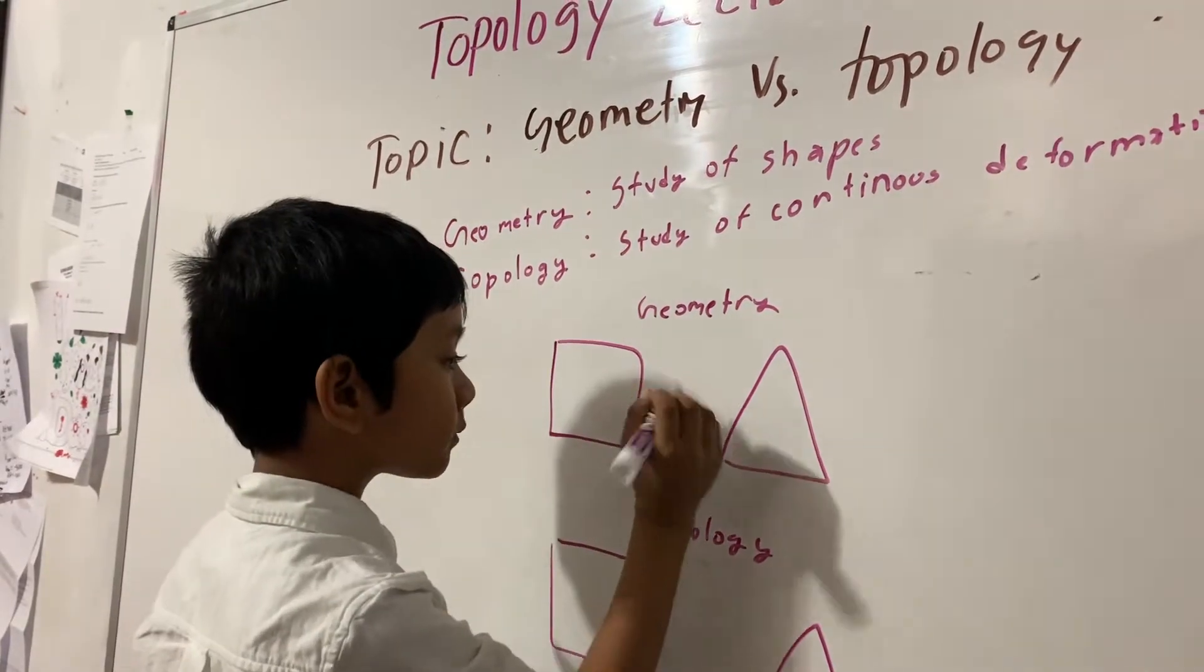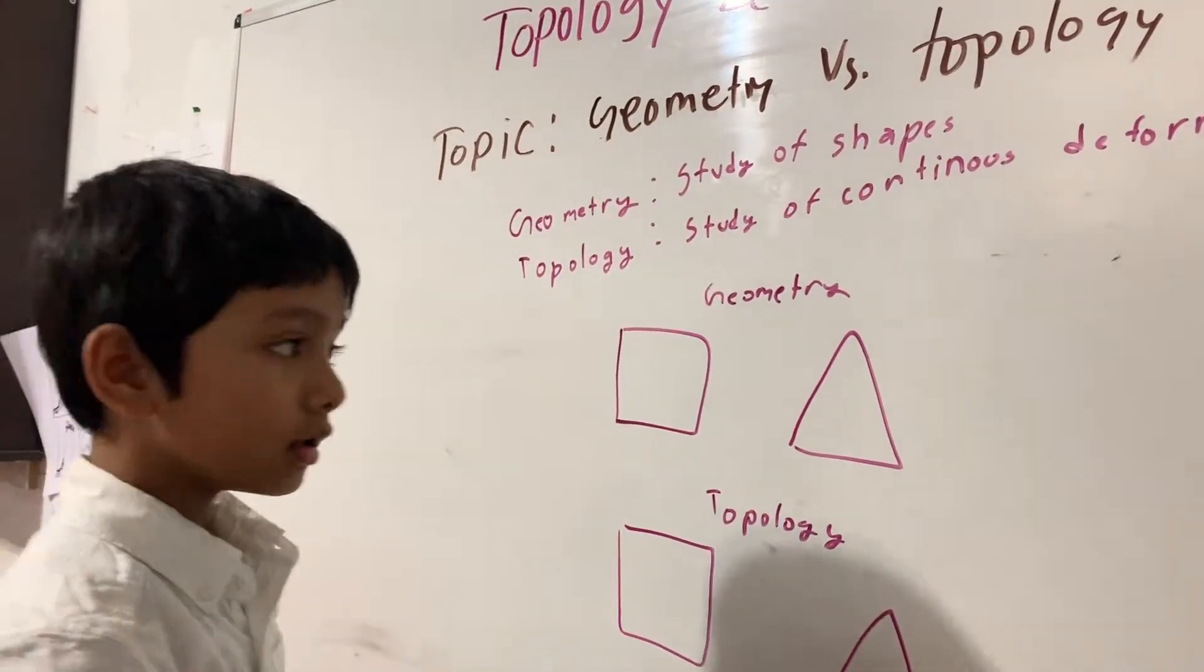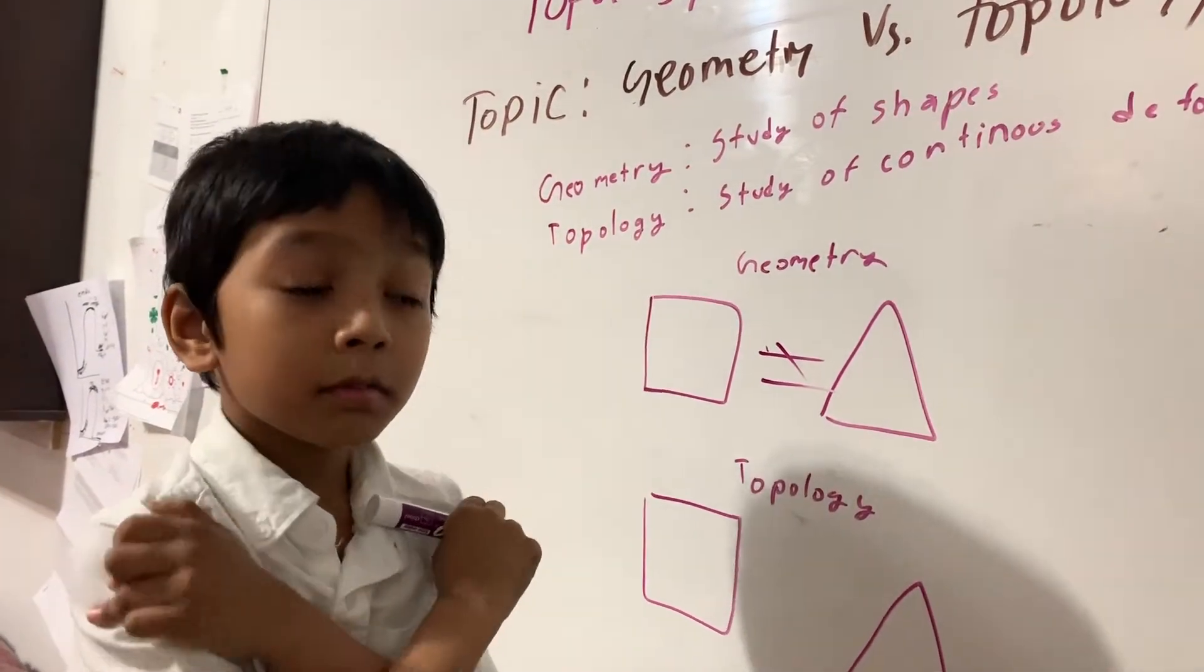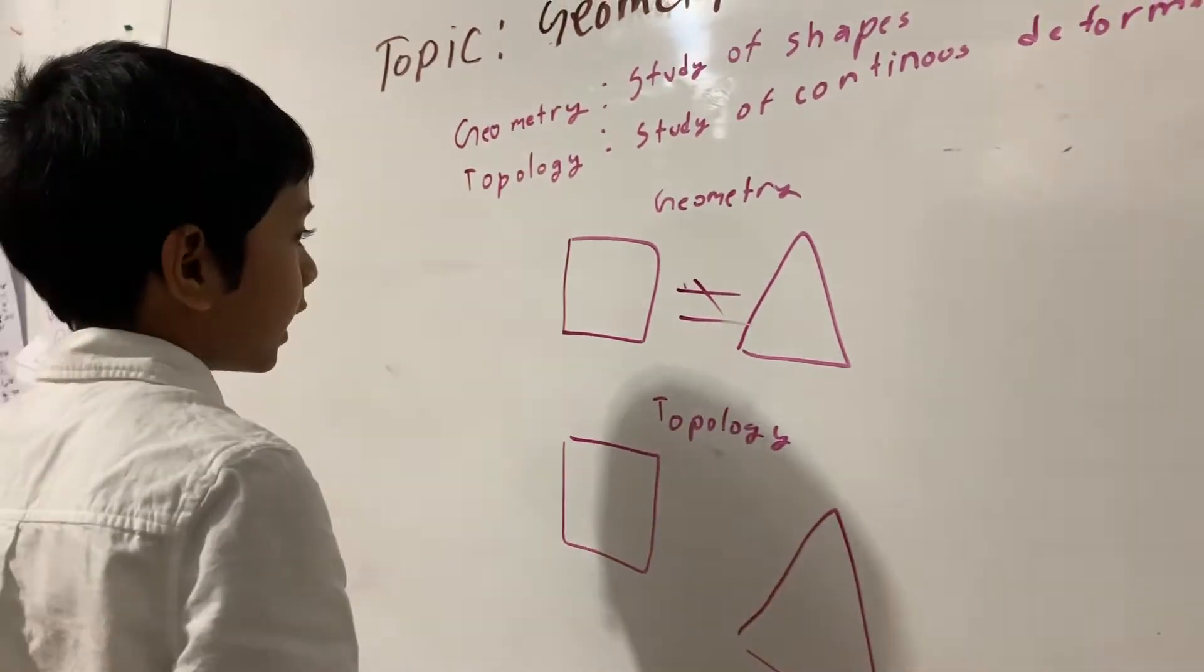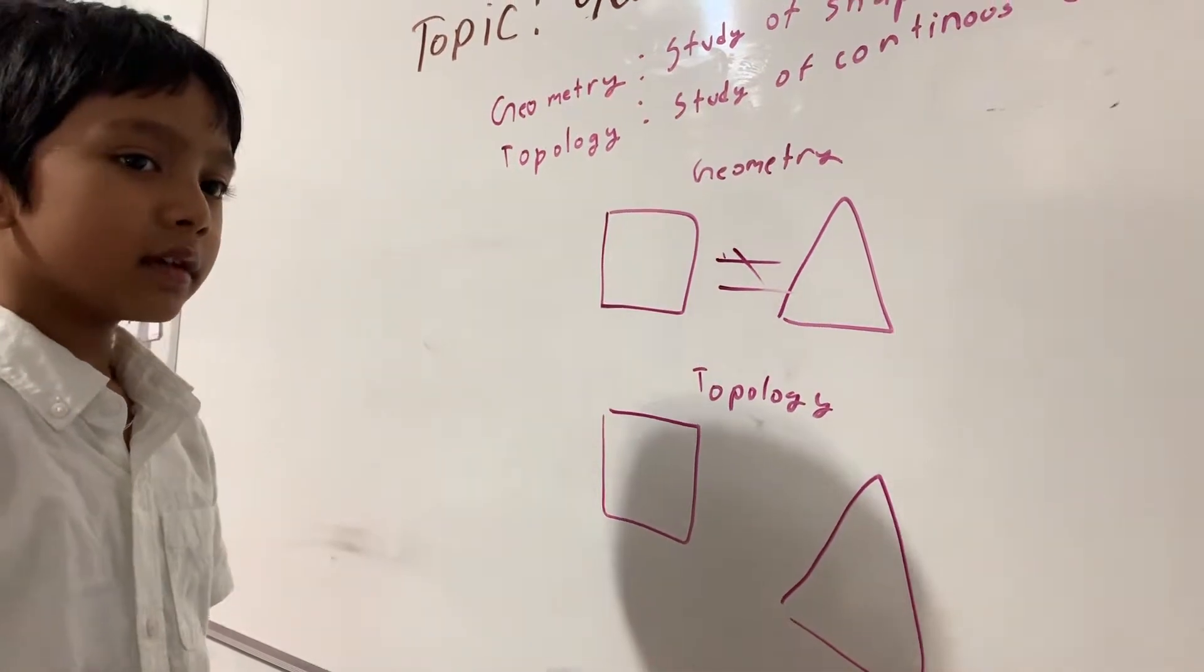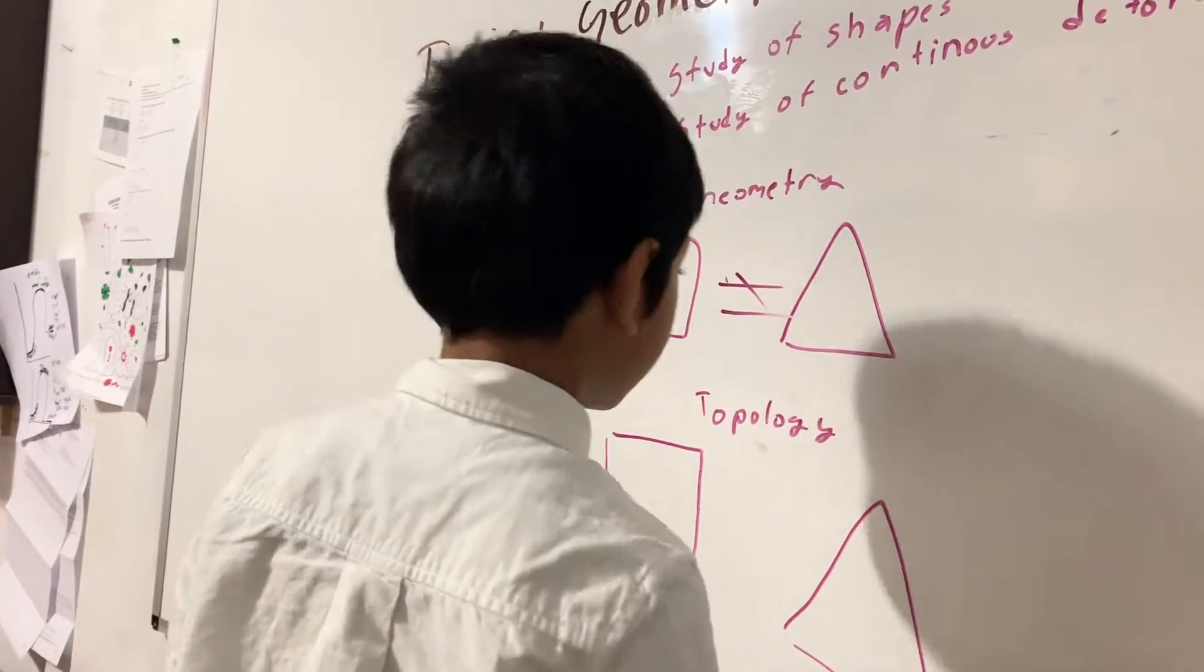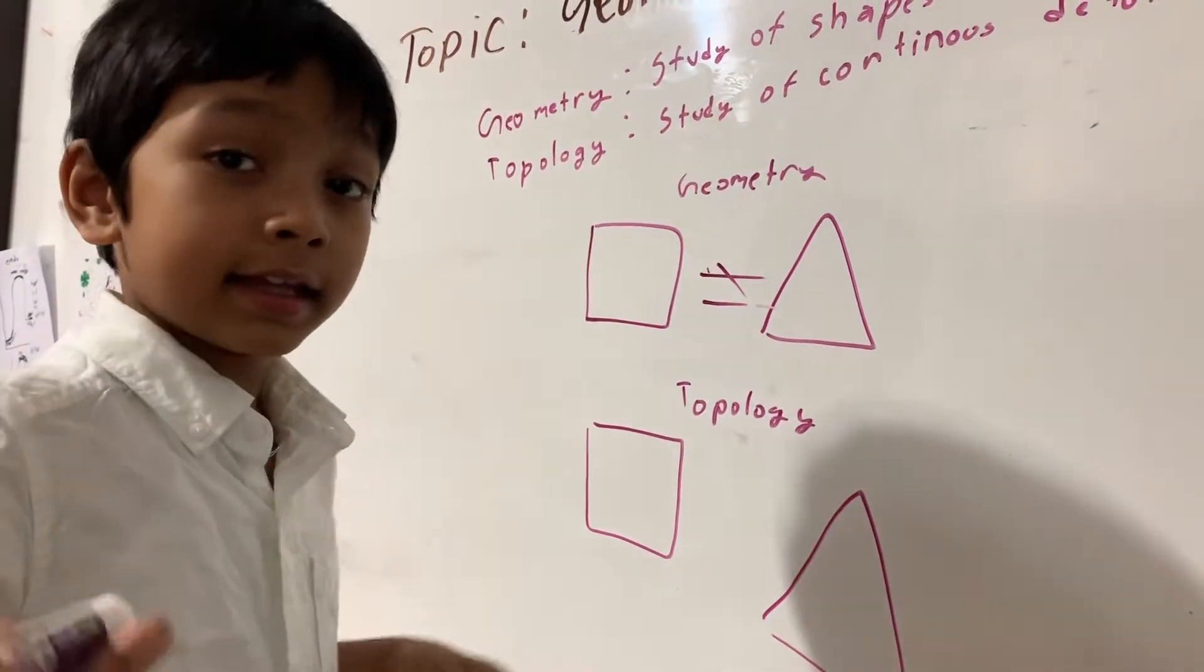In school, you know you have learned that a square is not equal to a triangle. But that's only just geometry, that is only just one study. Of course, a teacher would freak out if you said a square equals a triangle. But they actually can be equal. But this is not the case in geometry.